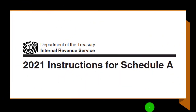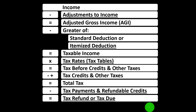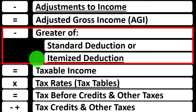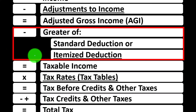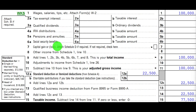Most of this information can be found on the Schedule A Instructions Tax Year 2021 on the IRS website at irs.gov. The income tax formula is focused on the itemized deductions as opposed to the adjustments to income, otherwise known as the above-the-line deductions or the deductions for adjusted gross income. Note that the itemized deductions need to be greater than the standard deduction in order to benefit from the itemized deduction.